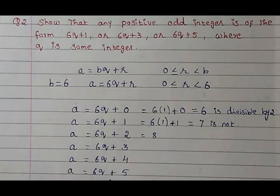So you try it here. 6×1 = 6 plus 5. It will be 11. So it is not divisible by 2.